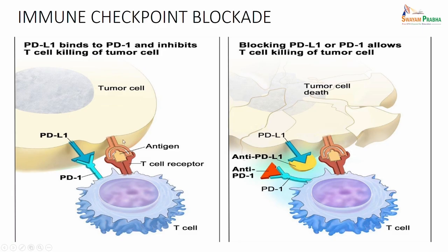Now, the tumor cell - this is a tumor cell and this is a T cell. Please see that within the tumor cell there is a particular kind of protein called the PD-L1, which is produced by the tumor cell and this binds to a receptor on the T cells called PD-1. So the PD-1 of the T cells binds to the PD-L1 of the tumor cell. The tumor cell is expressing the tumor specific antigen here and this antigen is recognized by the T cell receptor present in the T cell. The PD-L1 binding to PD-1 will inhibit the killing of this tumor cell by the T cells.